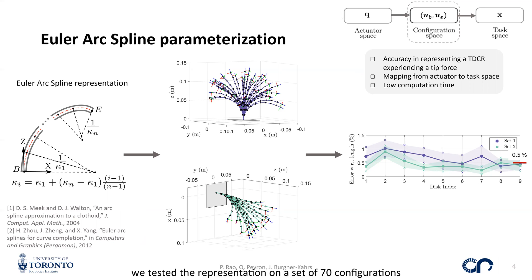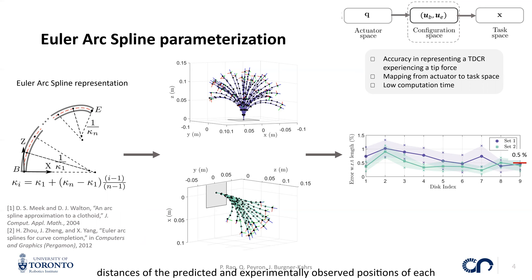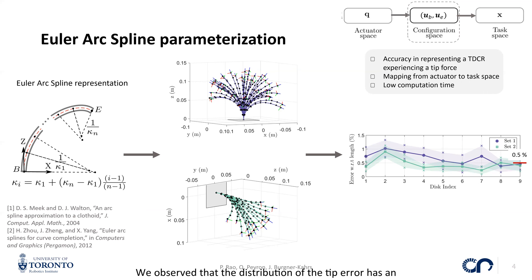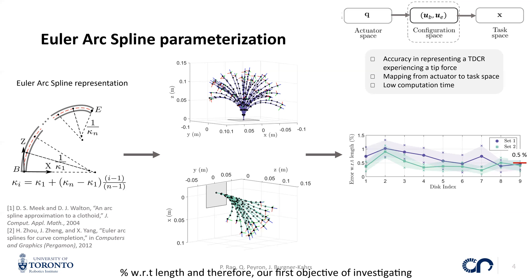We tested the representation on a set of 70 configurations to estimate its accuracy in representing a prototype. The Euclidean distances of the predicted and experimentally observed positions of each disk are plotted on the right, expressed as percentages with respect to length. We observed that the distribution of tip error has an average of less than 0.5% with respect to length. Therefore, our first objective of investigating its accuracy has been fulfilled.